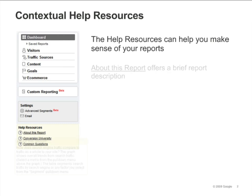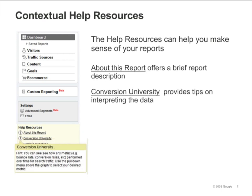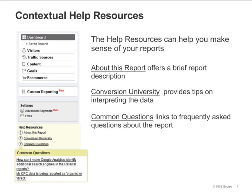You can get information about any report you're looking at by clicking one of the help resources. About this report offers a brief description of the report. Conversion University provides insight into how you might use and interpret the data. Common Questions links to Help Center articles that are related to the report.